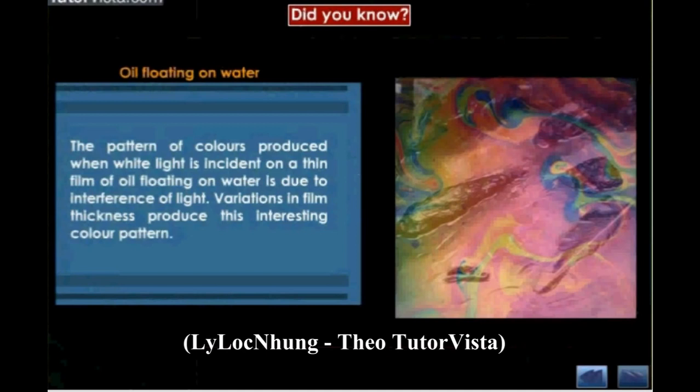The pattern of colours produced when white light is incident on a thin film of oil floating on water is due to interference of light. Variations in film thickness produce this interesting colour pattern.